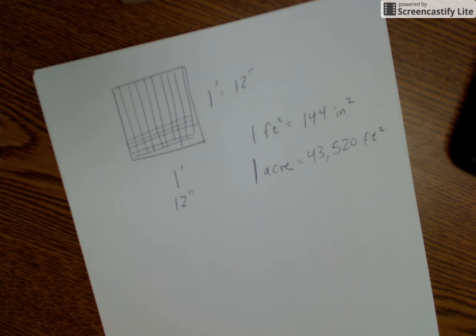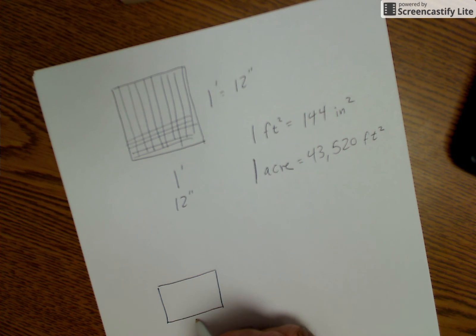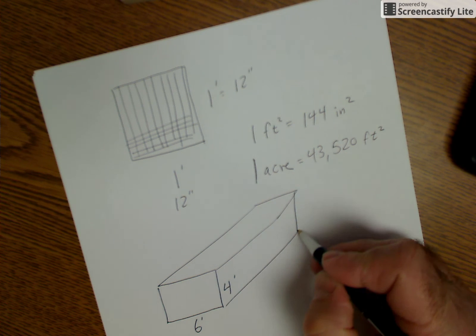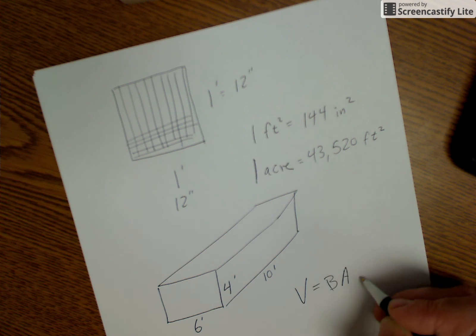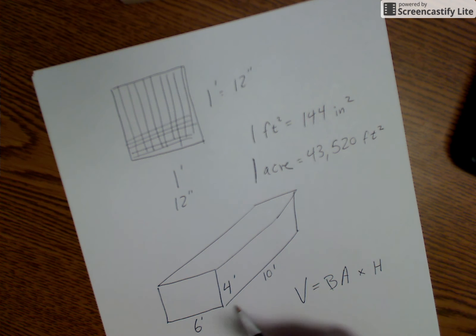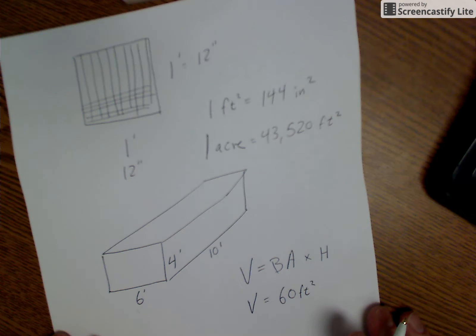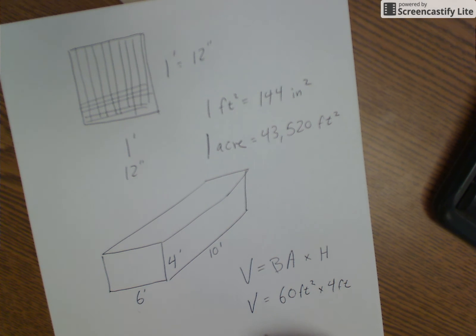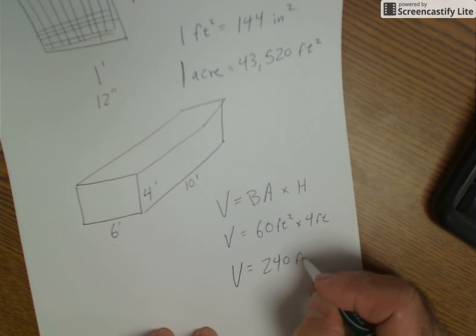Let's look at volumes of solids. Take a rectangular prism with a base of 6 by 10 feet and a height of 4 feet. Volume equals base area times height. The base area is 6 times 10 — 60 square feet — times the height of 4 feet, giving a volume of 240 cubic feet.